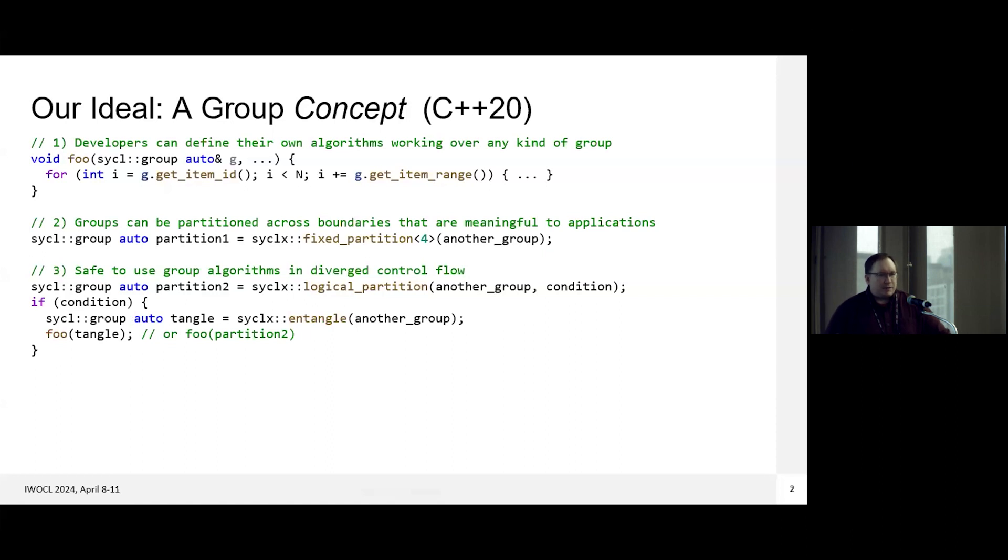Another problem we think this could help solve is it could give programmers a way to write group algorithms that can be safely used in diverged control flow. In SYCL 2020, the group algorithms have this requirement that they all have to be called in converged control flow due to limitations in implementations and different hardware capabilities.